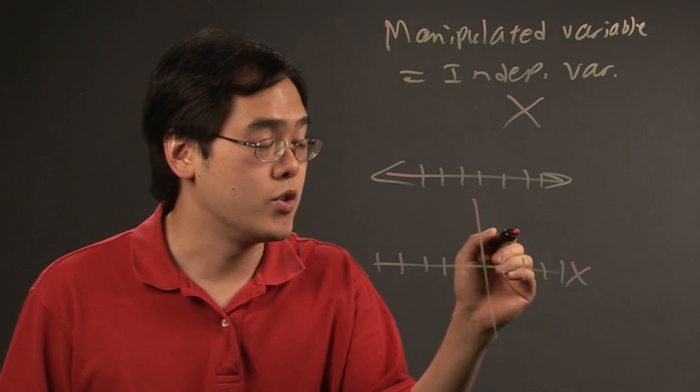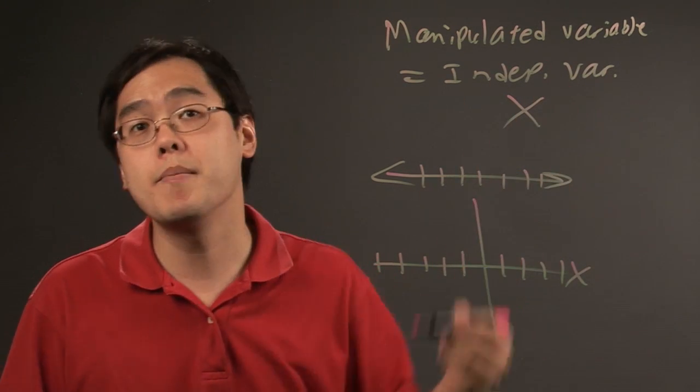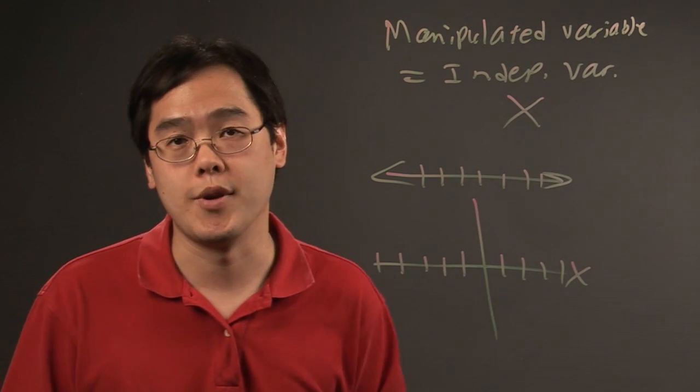So the x-axis, which corresponds to the x variable, which is the independent variable, which is the manipulated variable, is going to be on the horizontal side.